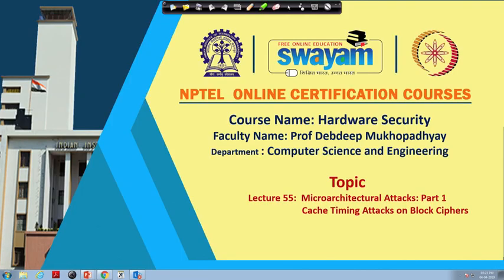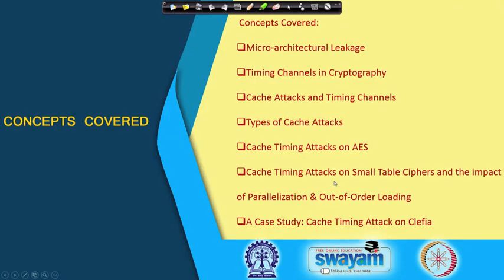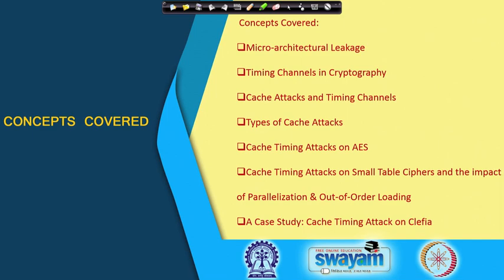Welcome to this class on hardware security. Today we shall be starting a new topic: micro-architectural attacks, which is the confluence of computer architecture and its effect on the security of ciphers or cipher implementations. We shall start with a discussion about micro-architectural leakages, then talk about timing channels in cryptography, cache attacks and timing channels created using cache memories, types of cache attacks, and finally cache timing attacks on AES.